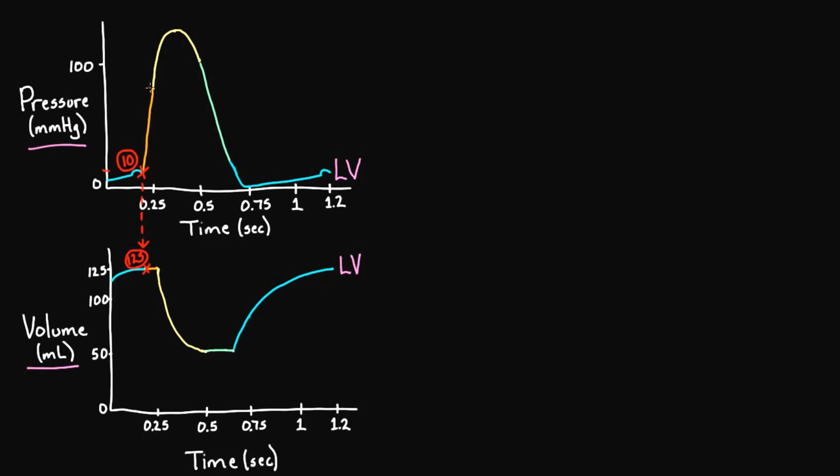Now let's do another one. This one up here is about 80 millimeters of mercury. And if I drop that line down, that gets me to about here. And of course, that is the same volume. Really, nothing has changed in the volume, even though the pressure has shot up.